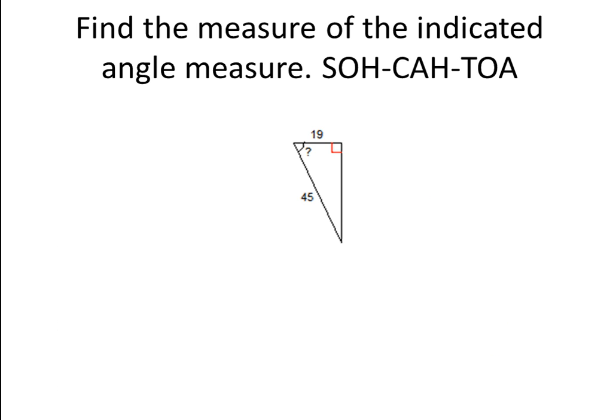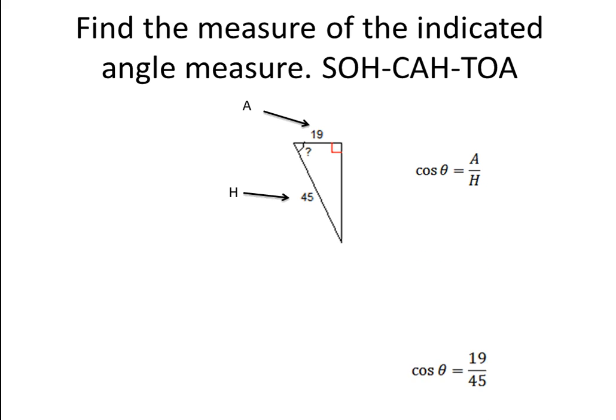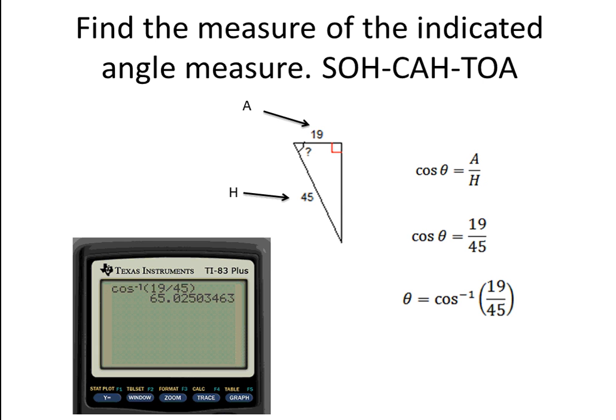Now another example. We have 19 as adjacent and 45 as the hypotenuse. SOH-CAH-TOA — the trig function with A and H is cosine. So cosine of theta equals adjacent over hypotenuse, which gives us cosine of theta equals 19 over 45. Then to solve for theta, do the inverse cosine and input the ratio in parentheses — make sure you put it in parentheses. This is exactly how you enter it into the calculator, and this is the angle measurement you get.